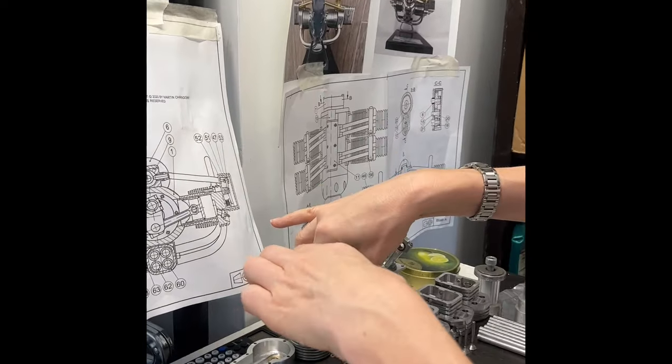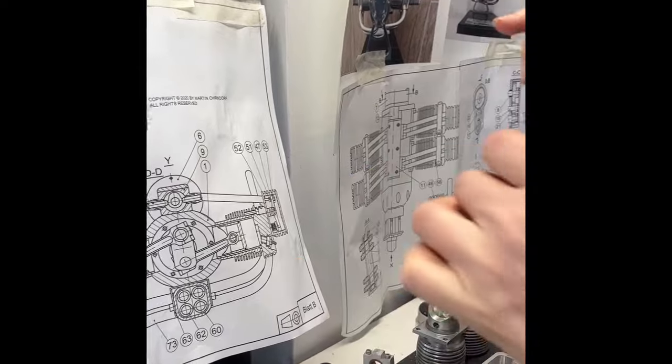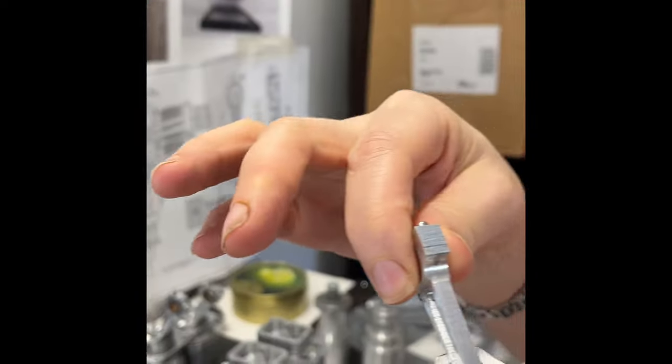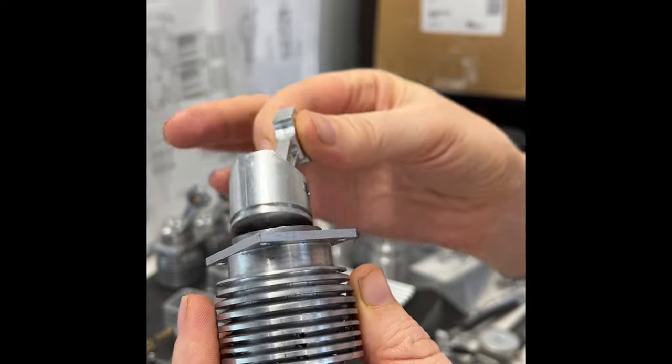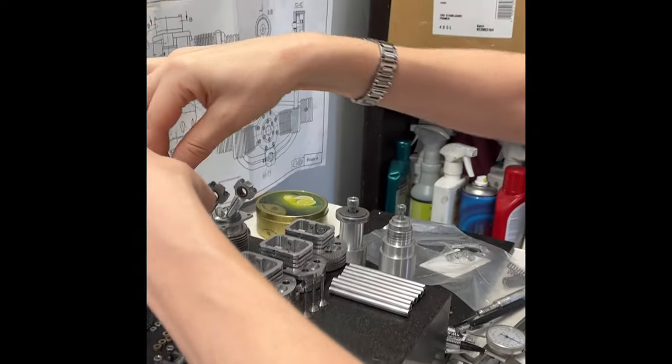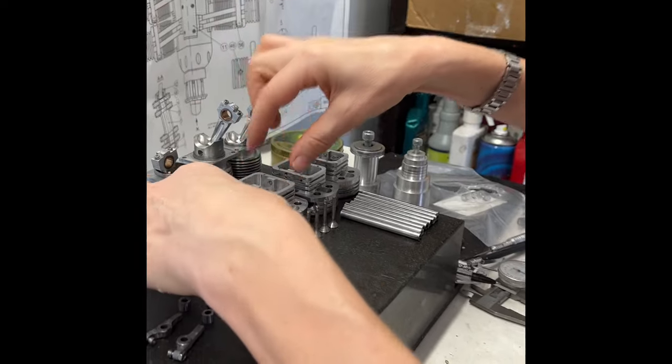The barrels have the piston, con rod, I don't know if you can see all that. That fits in nicely there. Then we've got the cylinder heads here.